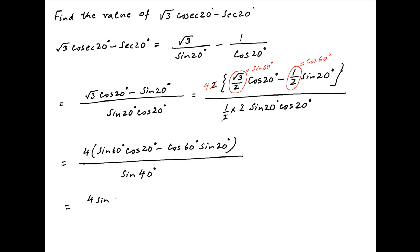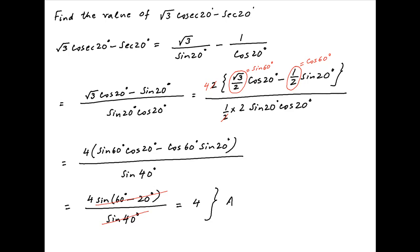Now the expression in brackets in the numerator is the expansion of sin of 60 minus 20 degrees. Therefore, the given expression is equal to 4 times sin of 60 degrees minus 20 degrees divided by sin of 40 degrees. Sin 40 degrees cancels across the numerator and denominator, and the value of the given expression simplifies to 4.